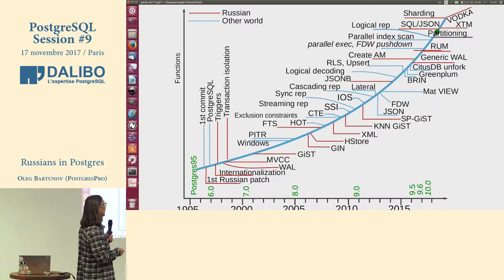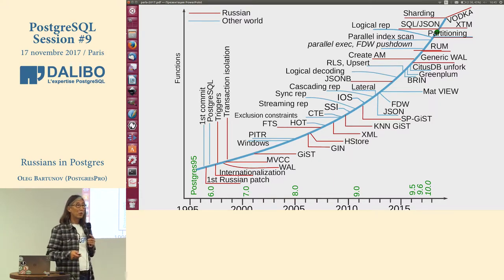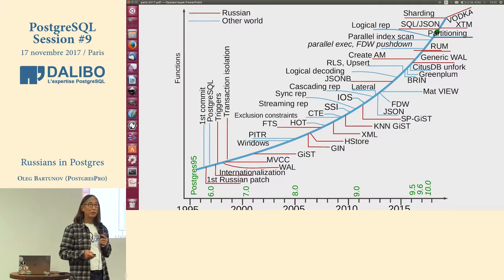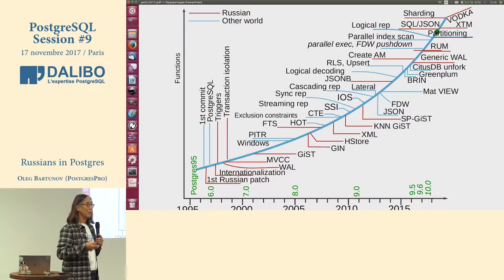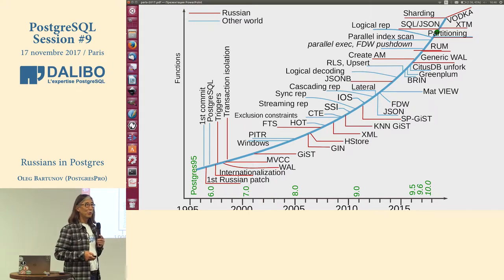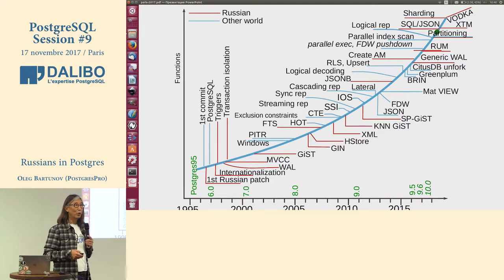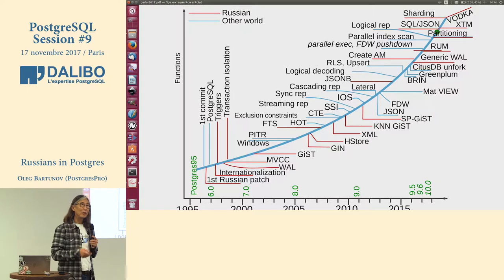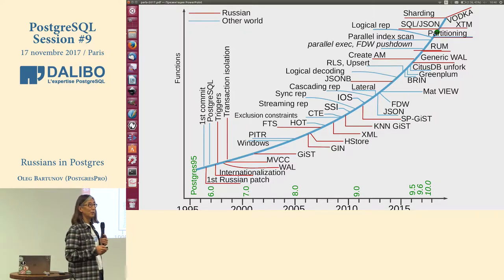We developed KNN-GiST. KNN-GiST is a hidden treasure of PostgreSQL. Not everybody knows about this, but please remember it and read the documentation, because KNN is a very, very interesting feature. I am very proud of this feature. It can accelerate your queries like a thousand times — not just 10% or 20%, but a thousand times. KNN is very powerful.